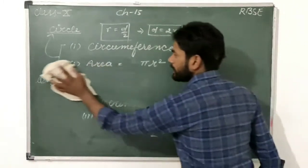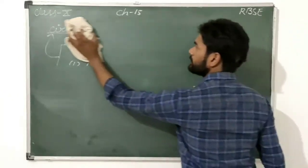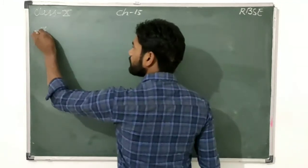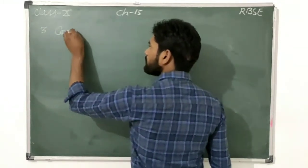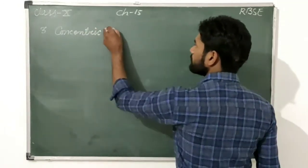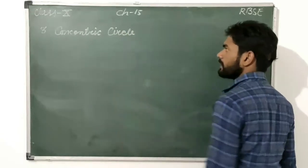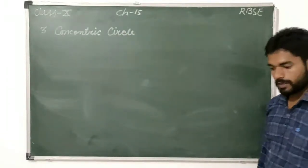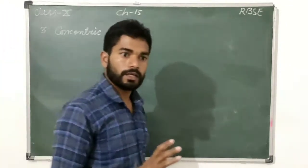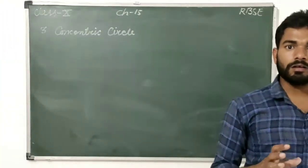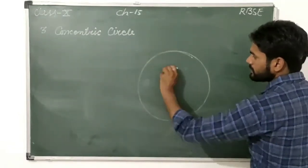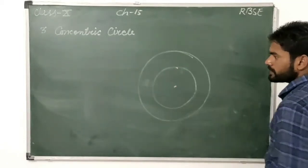Next is the concentric circle. The meaning of concentric circles is: if two circles have the same center point — one circle inside the other — and both share that same center point, they are called concentric circles.